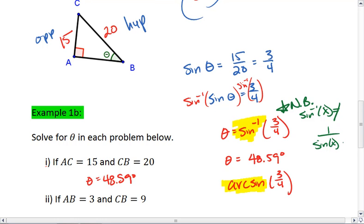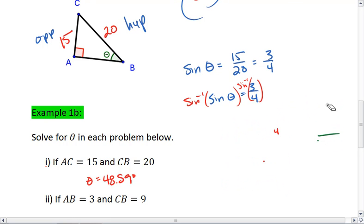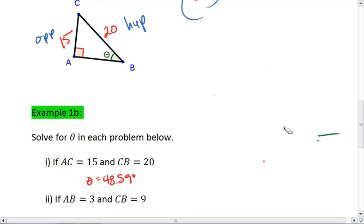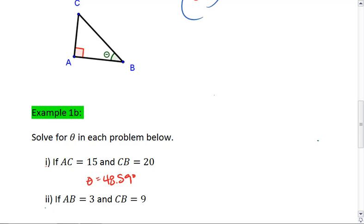Alright, let's try another example. Maybe this will help clear up any still lingering misconceptions. In this next one, you are told that AB is 3, CB is 9, and again, we're solving for theta. If you feel like you can do this on your own, go ahead and do so now. Pause the video and resume when you're ready to see the solution.